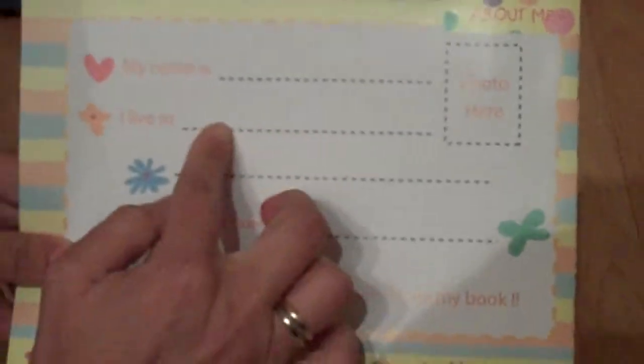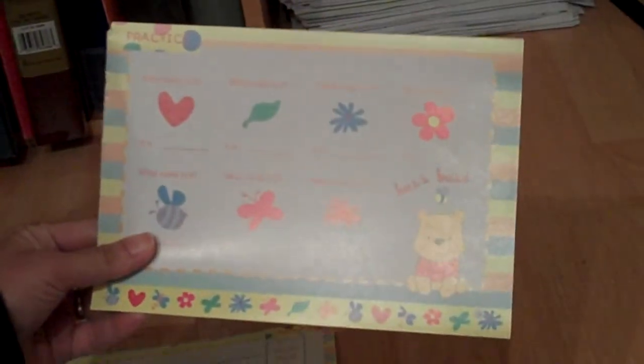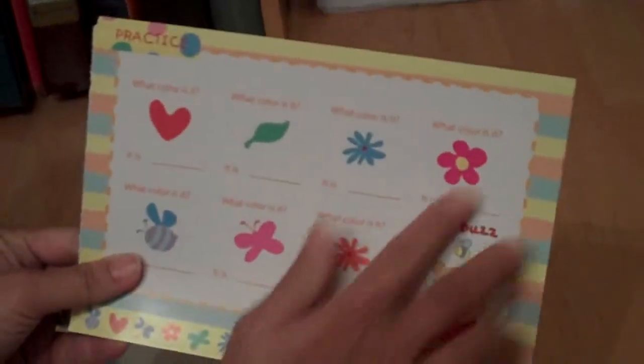And here you can make a little poster about me. You can have your child to write his or her own information. And again, here's another one. It's the color practice for all the spring pictures.